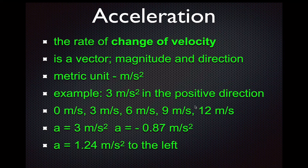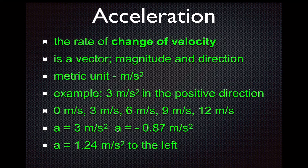Here are some examples of how we can write down acceleration. We might write A equals three meters per second squared. The direction is implied because it's a positive number, meaning the acceleration is in the positive direction. You could put a plus three here just for emphasis, but usually we don't. You could also be accelerating in the negative direction — for example, acceleration equals minus 0.87 meters per second squared. Or you could write acceleration equals 1.24 meters per second to the left or right or up or down or north, south, east, west, but usually in physics we stick with positive and negative.